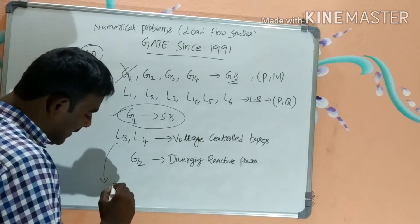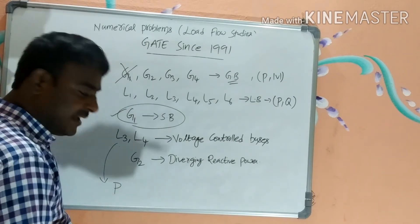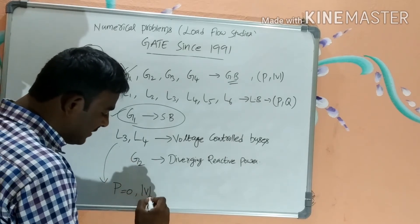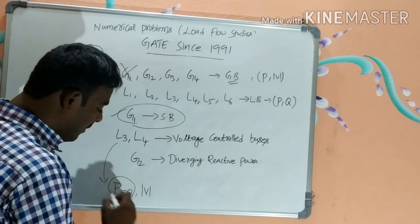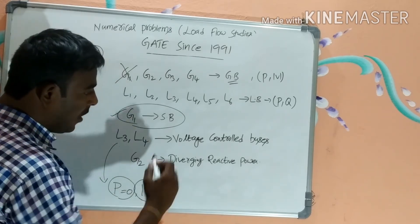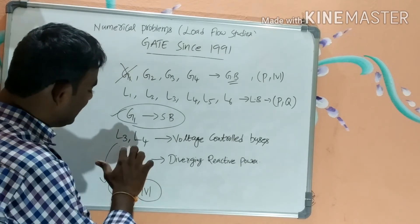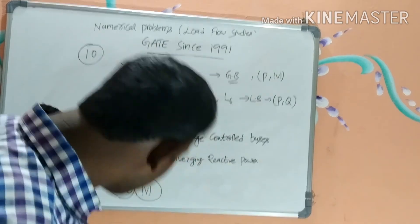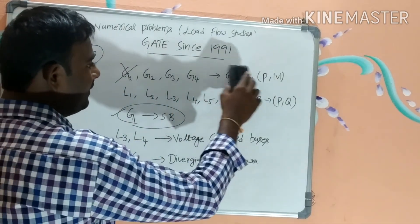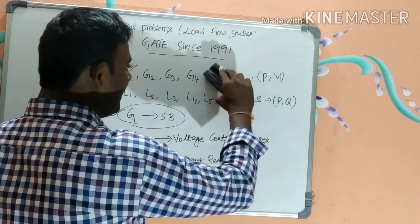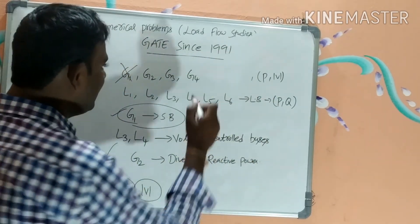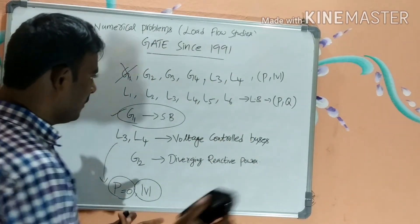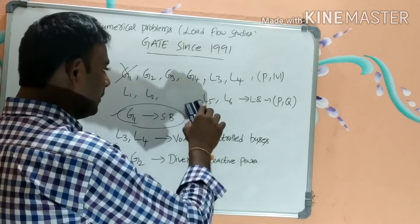A voltage-controlled bus has a FACTS device for which real power is zero and voltage magnitude is known. So both P and |V| are specified, which means L3 and L4 behave like PV-type buses. They are added to the generator bus group and removed from the load bus group.